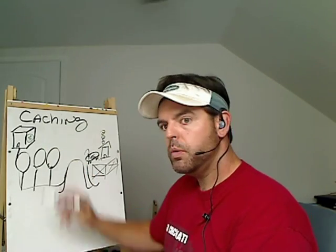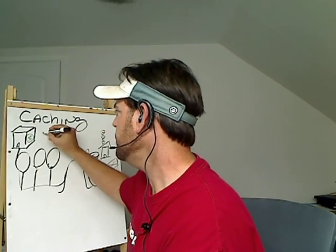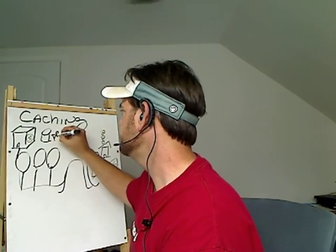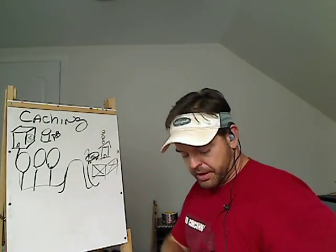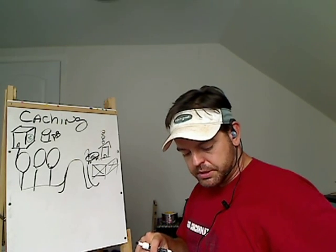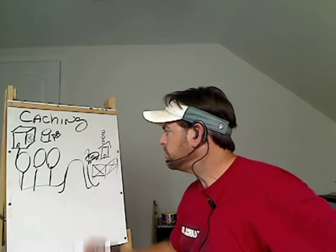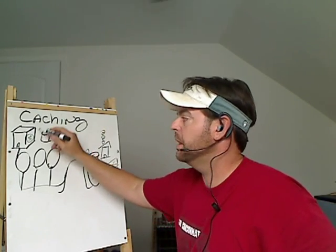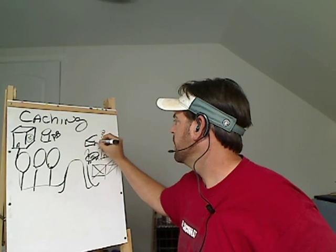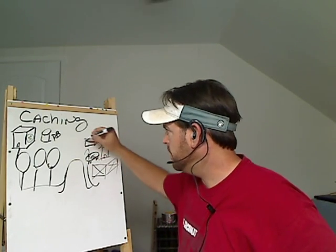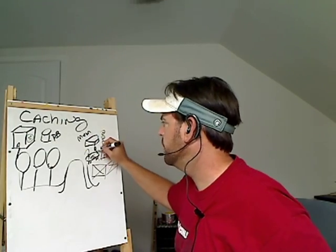You have a slow master source of data — essentially your database. You might have to execute some massively complex query to get the data out of the database. So you do it once: you go out to the database, run your complex query, pull your data back, and cache it locally — for example, on a drive or in memory. Then for a period of time, instead of going all the way to the database, you just grab it locally.